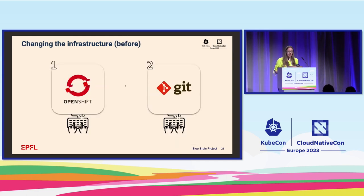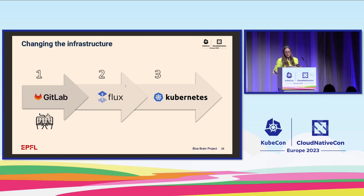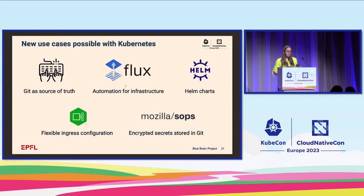Before, in our old setup, when we had to make a change we used the 'oc apply -f' command to apply the change to our OpenShift cluster, and then there was a second manual step to commit the changes to Git. This was quite error-prone — somebody could change something in the cluster and forget or not have time to commit it to Git. Now we're still storing our configuration in Git, but we're using Flux for a more GitOps approach — it picks up the changes and applies them in the Kubernetes cluster. New use cases now possible include: Git as an actual source of truth, Flux for automation, Helm charts, flexible ingress configurations with nginx, and Mozilla SOPS to encrypt secrets stored in Git.